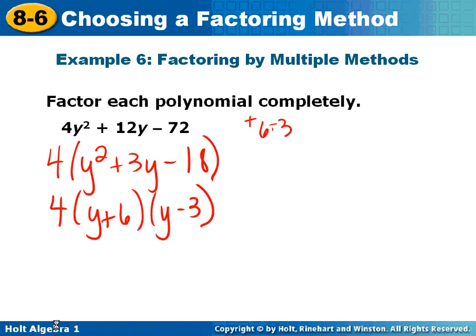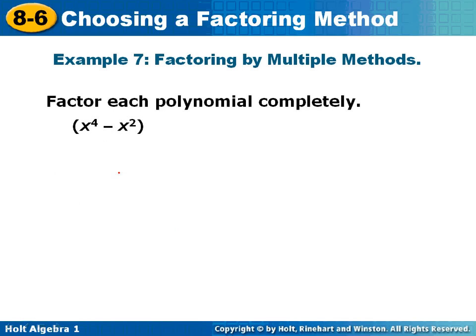Number 7. I need to factor this polynomial. I'm going to start again with greatest common factor. x to the 4th and x squared both have an x squared in common. If I take x squared away from x to the 4th, that leaves x squared. And if I take an x squared out of x squared, that's going to leave a 1.